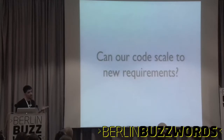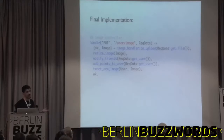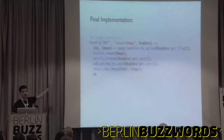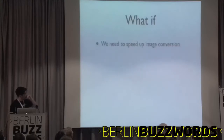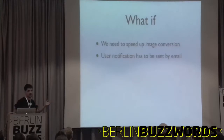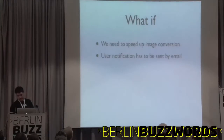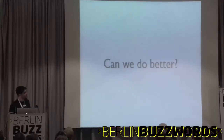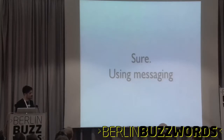Can our code scale to new requirements? It can't, because every time there was something new, we had to go there and modify the code. What if we need to speed up the image conversion — what happens when it has to do it concurrently on 100 servers or 20 machines on EC2? What if notifications now have to be sent by email? What if we have to stop tweeting about new images — scaling down requirements? Will we always go back to that code and modify something? The question is: can we do better? Sure, we can, using messaging.